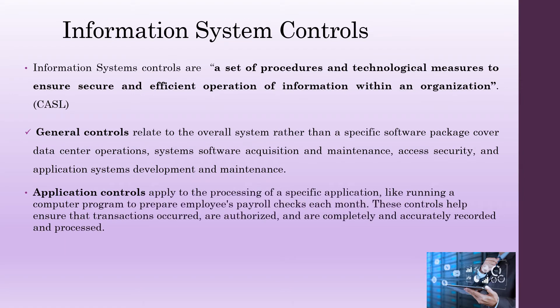Application controls are applied to the processing of a specific application, such as running a computer program to prepare an employee payroll check each month. These controls help to ensure that transactions are authorized and are completely and accurately recorded and processed. There are three types of application controls: input controls, processing controls, and output controls.